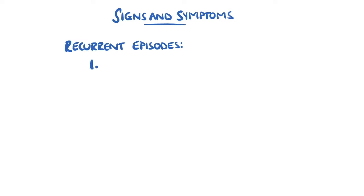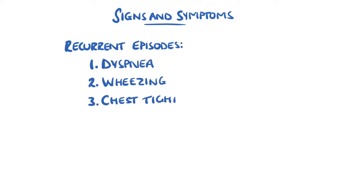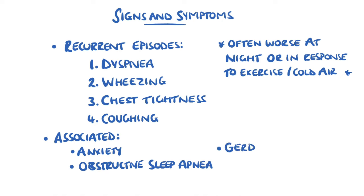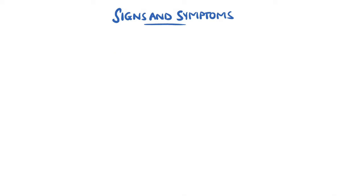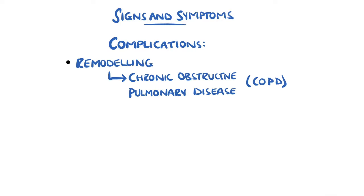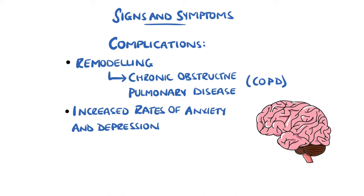The characteristic findings in asthma are recurrent episodes of shortness of breath or dyspnea, wheezing, chest tightness, and coughing. These are often worse at night or in the early morning, and can also be worse in response to cold air and exercise. Anxiety is also more common in patients with asthma, as are obstructive sleep apnea and gastroesophageal reflux disease, which is often misdiagnosed as asthma. Airway remodelling can lead to chronic obstructive pulmonary disease (COPD), and there is also an increased prevalence of anxiety and depression in people who suffer from asthma.